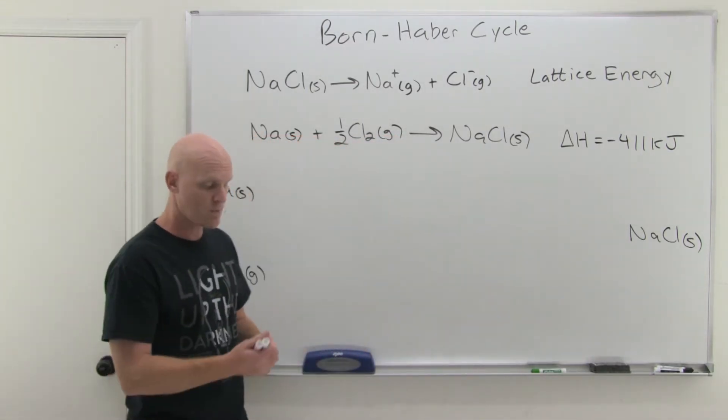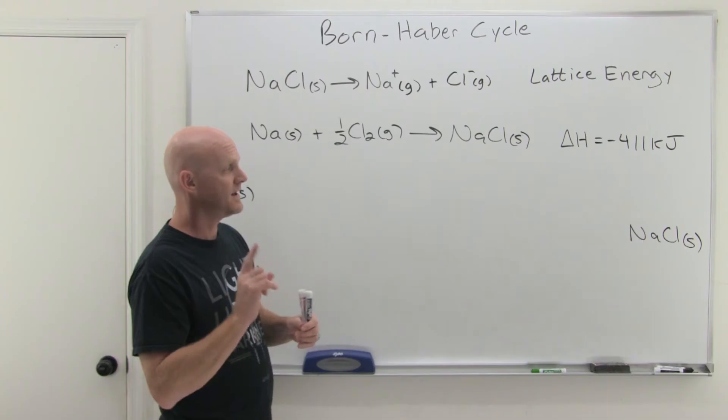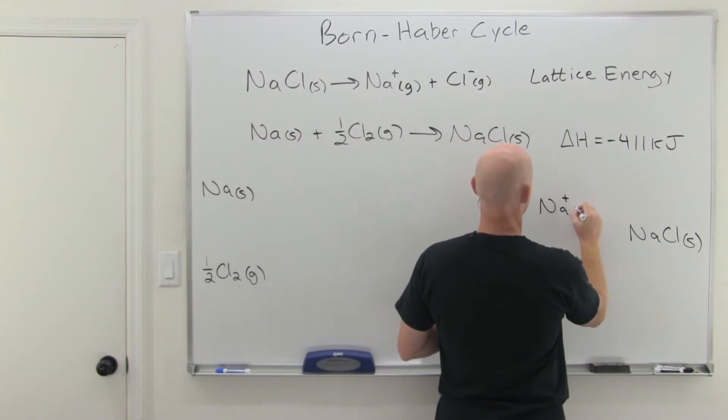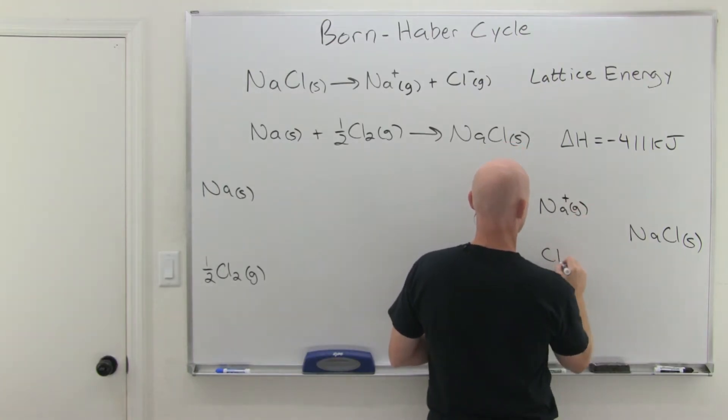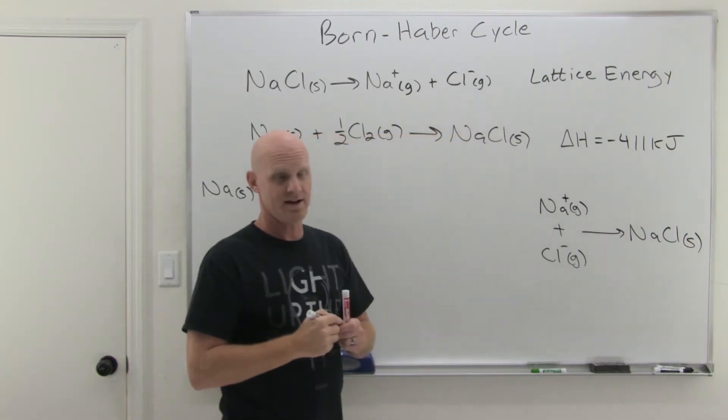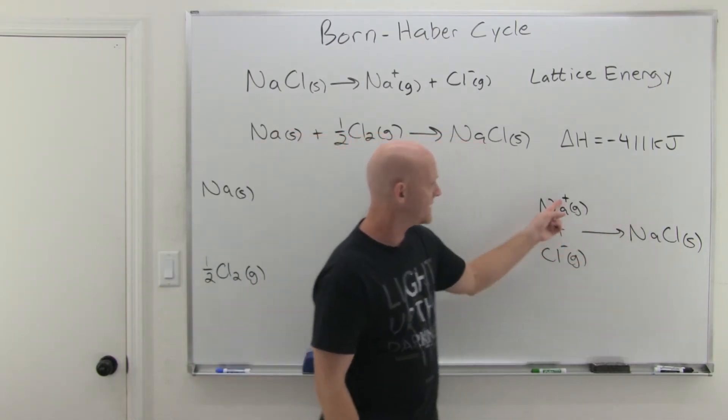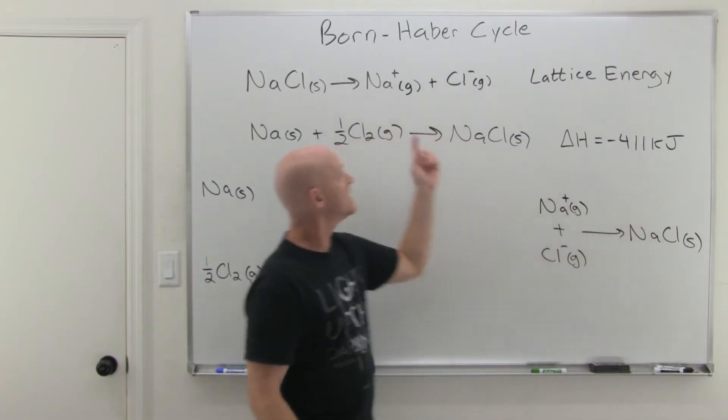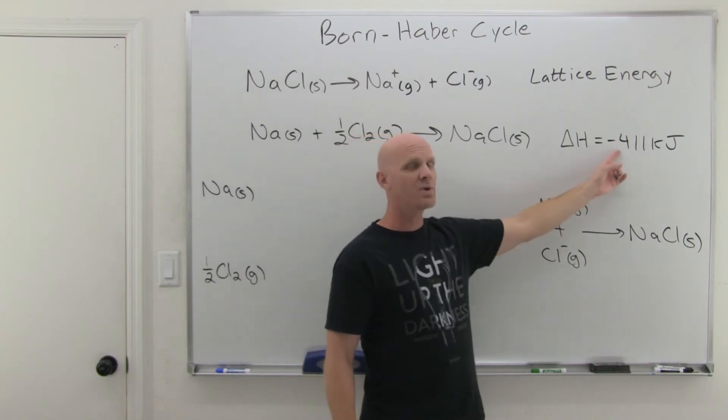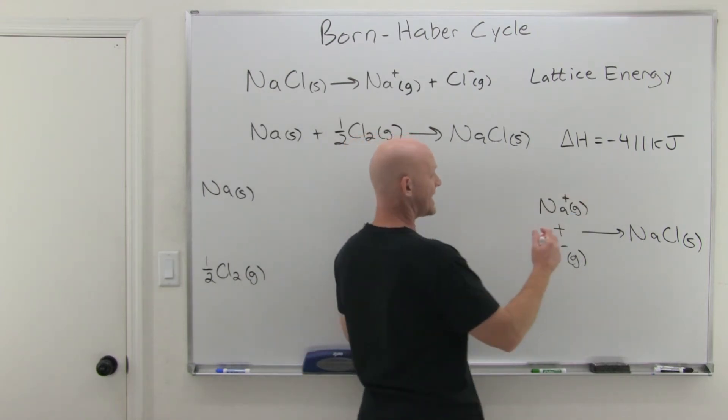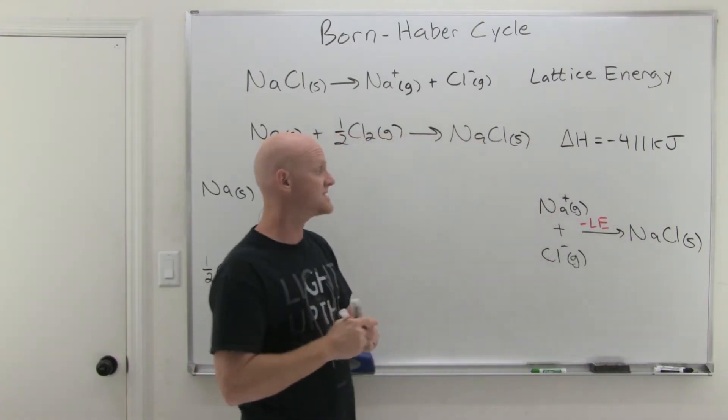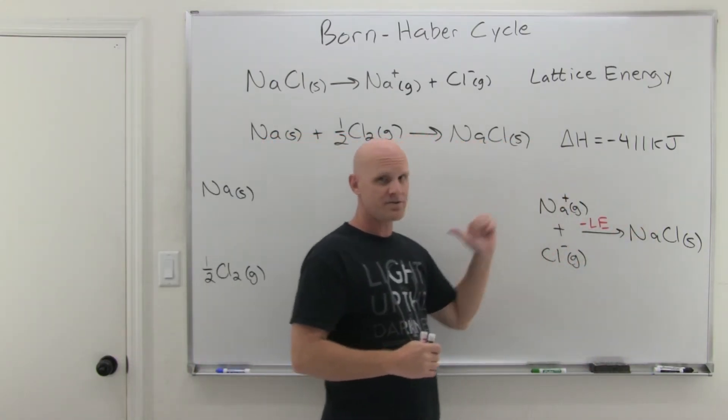But instead of doing it in a single step, we're going to do it in multiple steps. And the key is this: the very last step here is going to involve gaseous sodium ions and gaseous chloride ions being combined to form NaCl. And if you notice, NaCl solid turning into the gaseous ions, if we went backwards, that's lattice energy. And so in this calculation, that's all going to add up to negative 411 kilojoules. The very last step is simply going to be the subtraction of the lattice energy, since it's the exact reverse of the lattice energy.